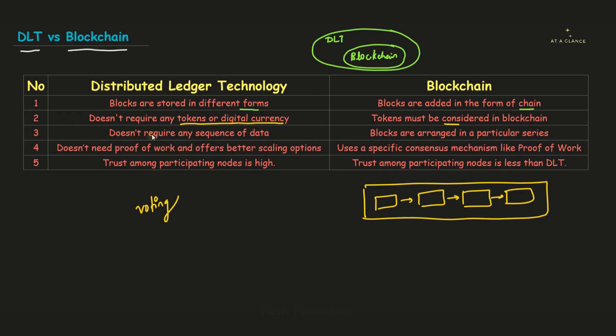Now when we talk about the third difference, DLT doesn't require any sequence of data. As we already have seen, the data can be stored in any format. The blocks can be arranged in any format. So sequence of data, even if it is not there, it doesn't make any problem. But when we talk about blockchain, blocks are arranged in a particular series. The series has to be maintained because every single current block is going to have the information of the previous block. So that particular series has to be maintained in blockchain technology. No doubt, both these technologies will have the ledger immutable. That means no changes can be done inside the data that is stored inside the network. The data is tamper-proof.